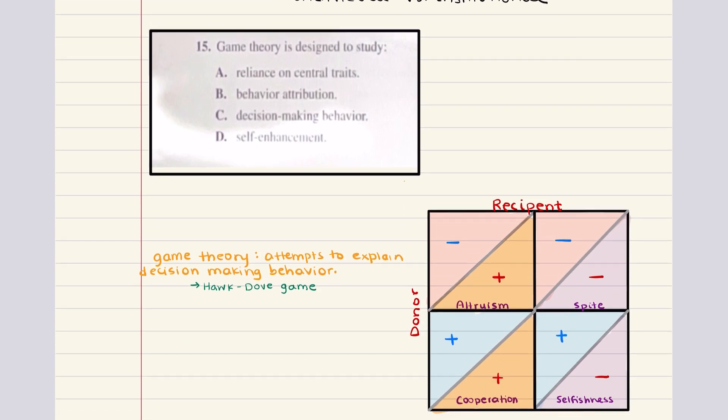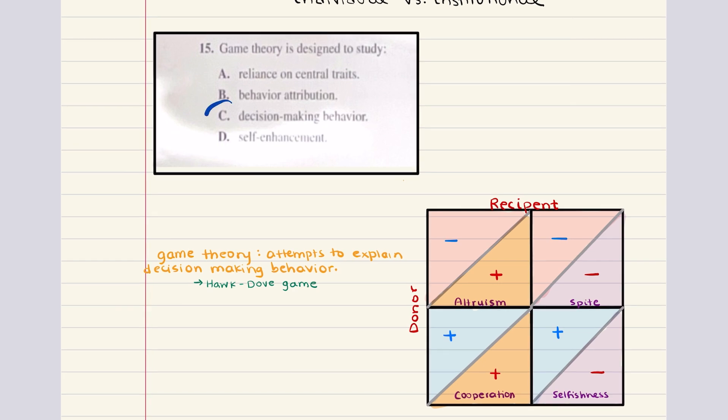Then last but not least, we have 15, which says game theory is designed to study blank, reliance on central traits, behavior attribution, decision-making behavior, or self-enhancement. Game theory was originally designed to study decision-making behavior in economics and mathematics. And it has now been used to describe decision-making in other fields as well, like politics, biology, philosophy, and so on. The correct answer for 15 is going to be C. Game theory is designed to study decision-making behavior.